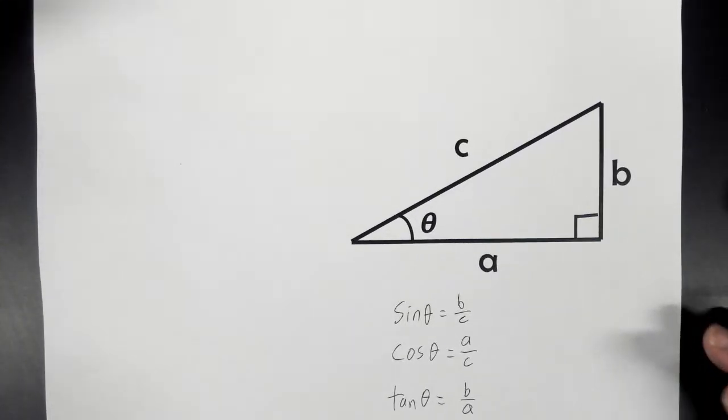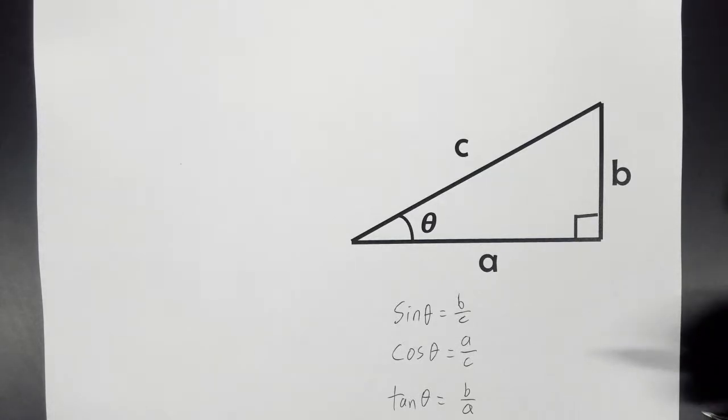What up, everybody? This is Mr. Stan. Today, we're going to talk about how to use sine, cosine, and tangent, not just to find a missing side, but this time to find a missing angle, an angle that we don't know, an unknown angle.